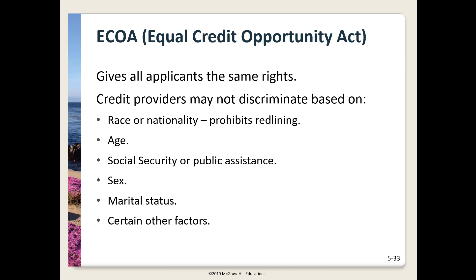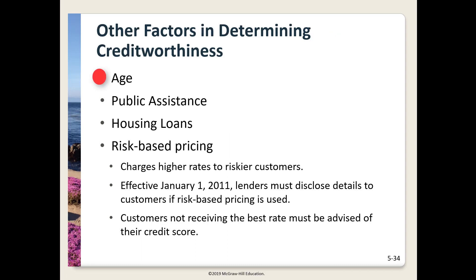If you apply for credit and are denied, you need to be aware of the Equal Credit Opportunity Act (ECOA). All applicants for credit must be given the same rights. Applicants cannot be discriminated against due to race or nationality, age, receiving Social Security or public assistance, or sex or marital status. Regarding age: if you're old enough to sign a legal document in your state, a creditor may not turn you down or decrease your credit because of your age. You may not be denied credit because you receive Social Security or public assistance, though this source of income can be considered in determining your creditworthiness.